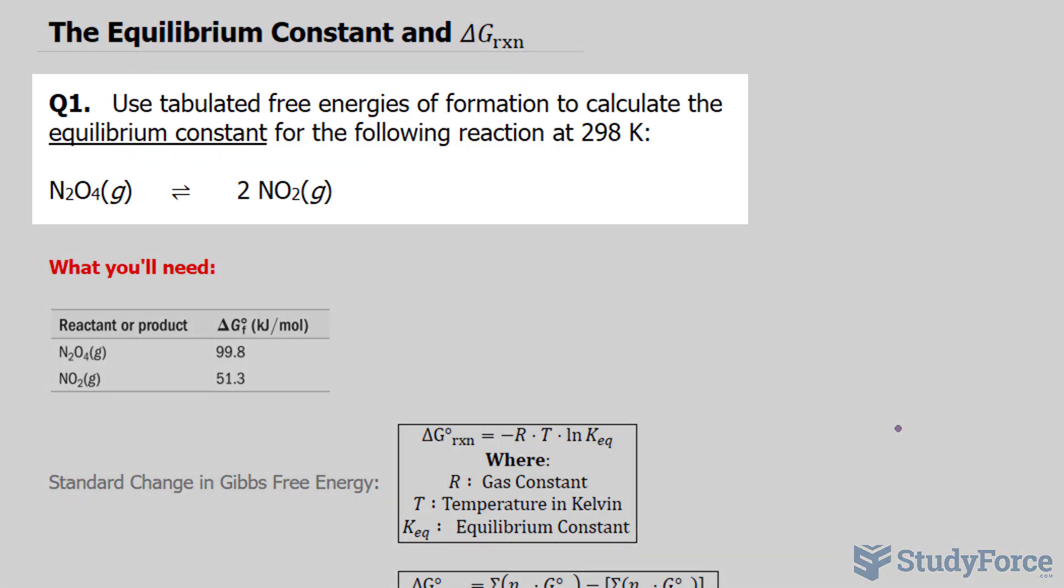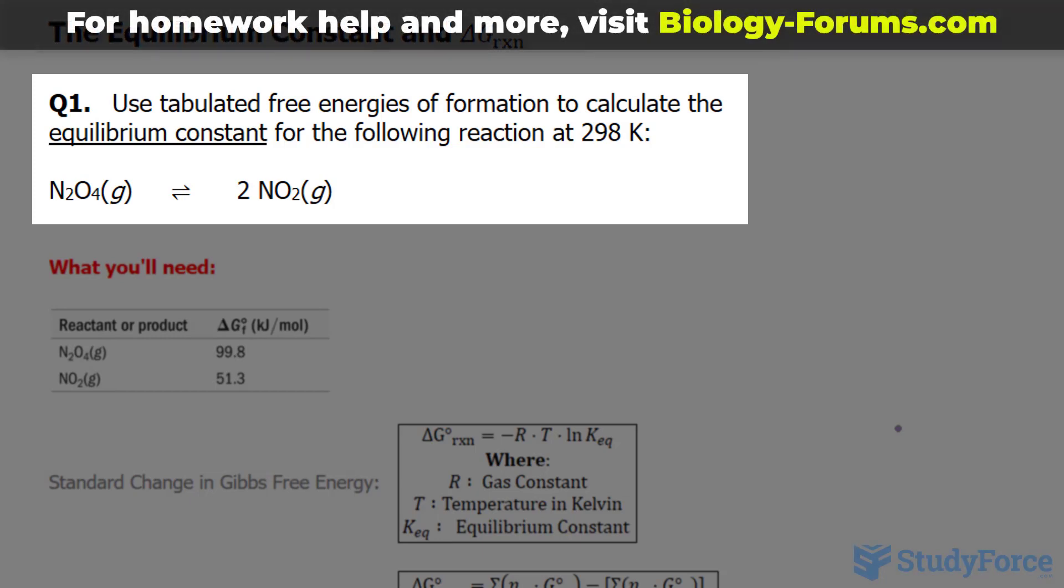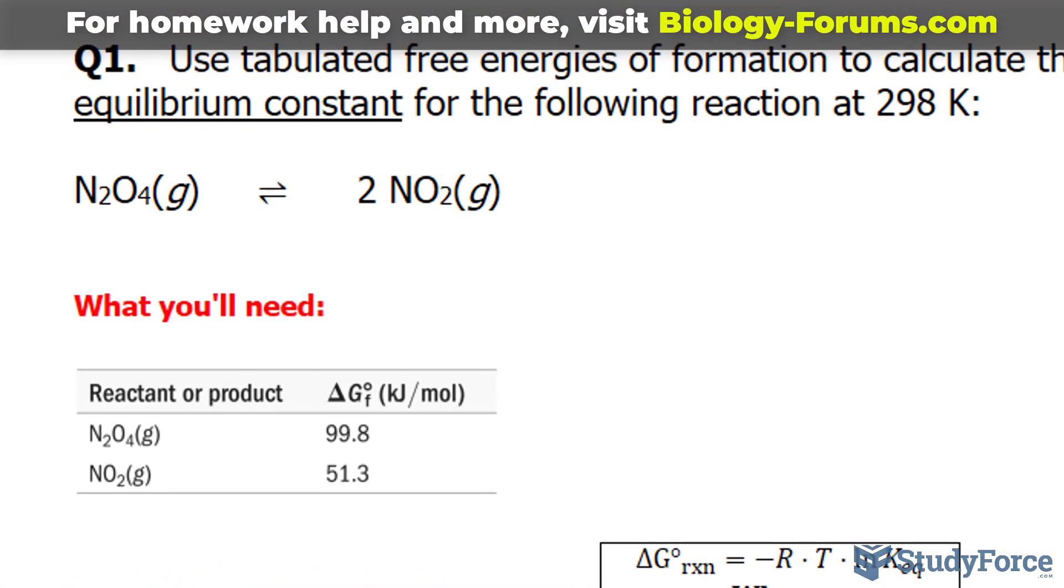The first question reads: use tabulated free energies of formation to calculate the equilibrium constant for the following reaction at 298 Kelvin. We go from N2O4 to two molecules of NO2.